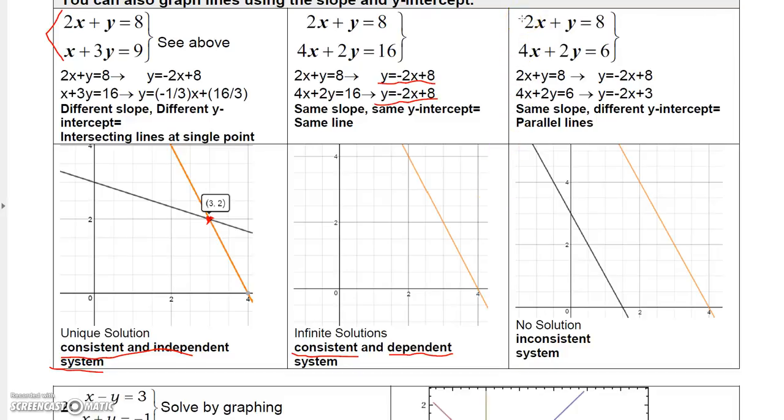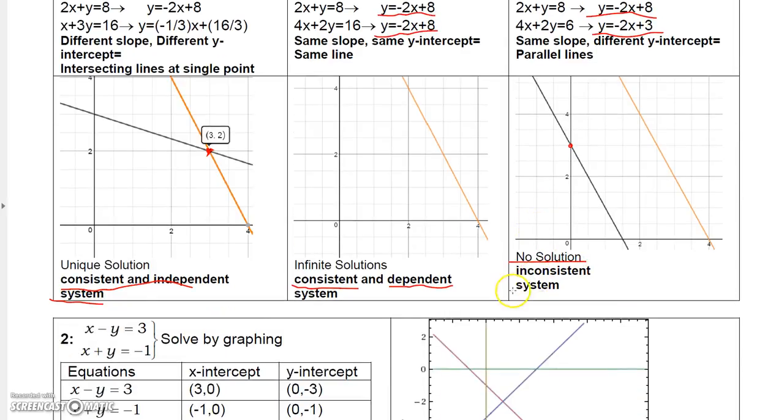The third example here, if you were to solve this in terms of mx plus b, the slope intercept form, you'll see that both of these lines have the same slope. But they have different y-intercepts. This one intersects the y-axis at three and this one intersects the y-axis way up here somewhere at eight. But they have the same slope. Well, since they have the same slope, there's no way they'll ever intersect. So there's going to be no solution for that one. And when there's no solution, we call that an inconsistent system.